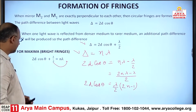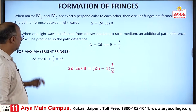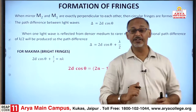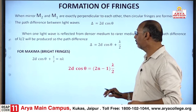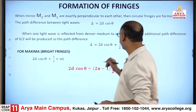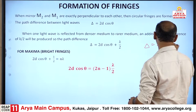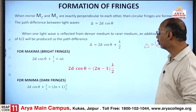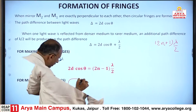This is the condition for the bright fringe in the Michelson interferometer: 2D cosθ = (2n − 1)λ/2. Now, remember the condition for a dark fringe — the path difference should be equal to (2n + 1)λ/2.